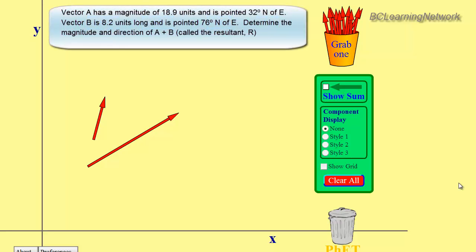We're going to look at how to add together two vectors using something called the component method. The question we're going to answer is as follows. Vector A is 18.9 units long, and it is at an angle of 32 degrees north of the east line.